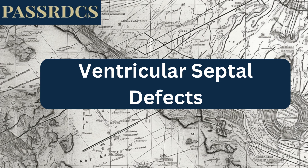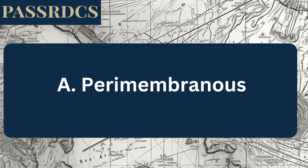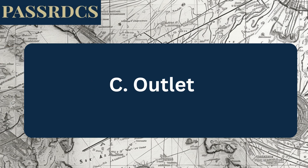In this question, I'm going to ask you which of the following are types of ventricular septal defect — or more importantly, what is NOT a type of ventricular septal defect? The options are: perimembranous, trabecular, outlet, inlet, secundum, or malalignment.